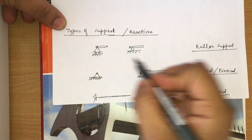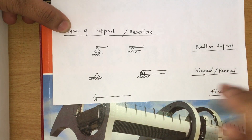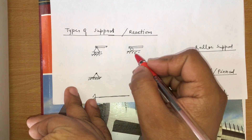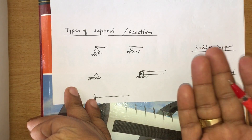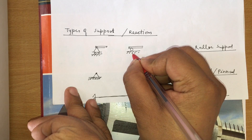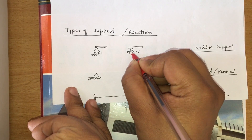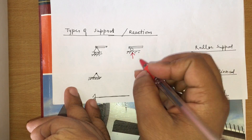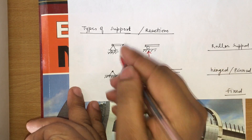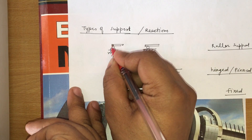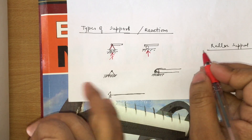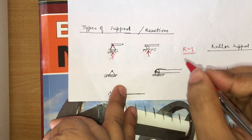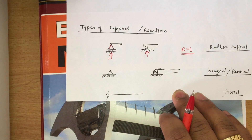The first and basic support is the roller support. It will always give only one reaction. As you can see, a roller — like someone skating — can only give a reaction in the vertical direction. If the roller is in a vertical plane, it gives a horizontal reaction. Either way, only one reaction is produced.